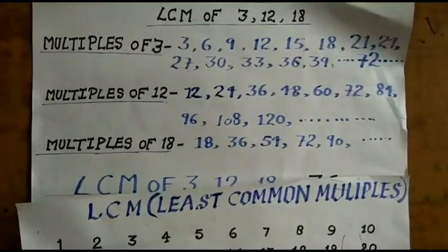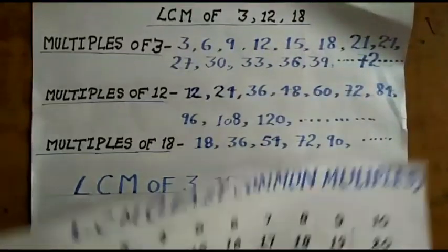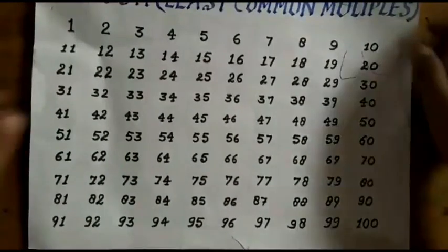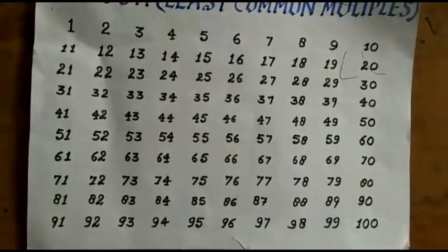So students we will find LCM of 3, 12 and 18 from this table. So first we will select multiples of 3 here. So multiples of 3 starting from 3.